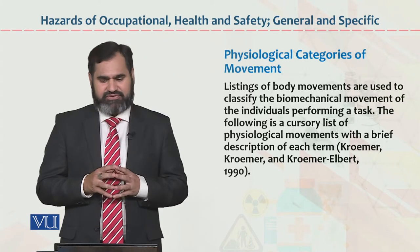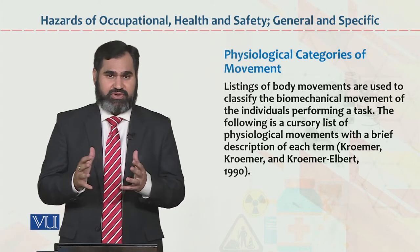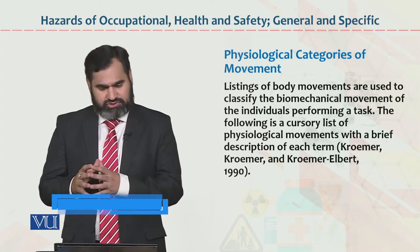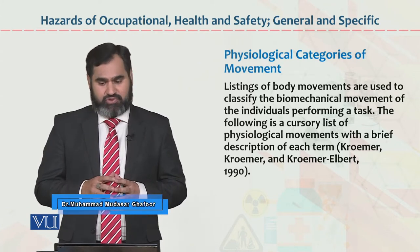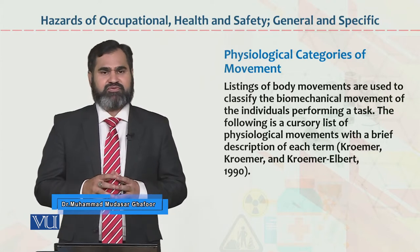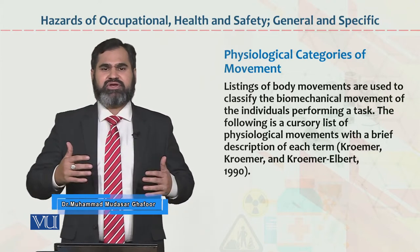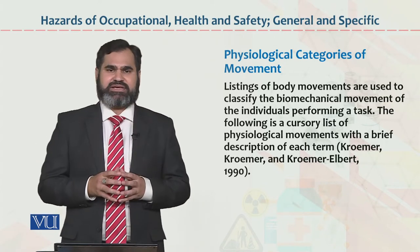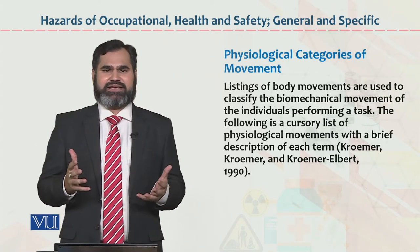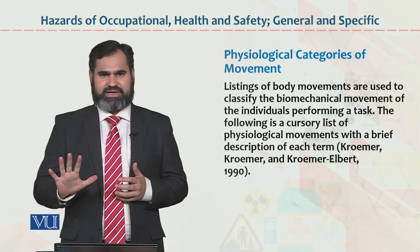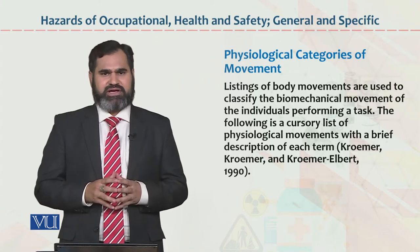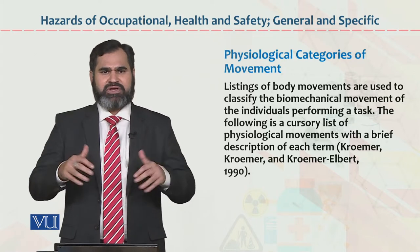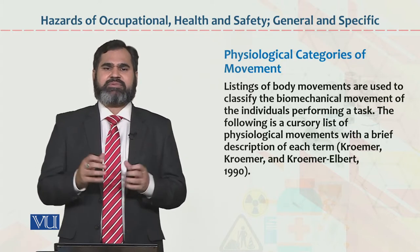The first part is physiological categories of movement. Listings of body movements are used to classify the biomechanical movements of the individual. When individuals perform a task, the body movements are used to classify the biomechanics movements. For example, this is a hand diagram. On the next slide I will show you the pictorial effect. Here are the hand movements; we can see how it works in control.